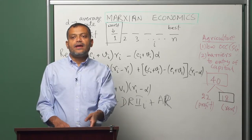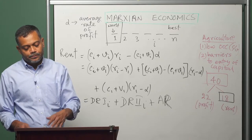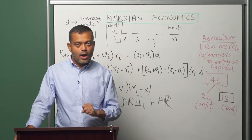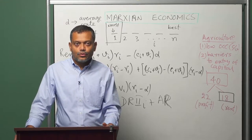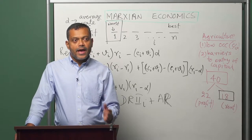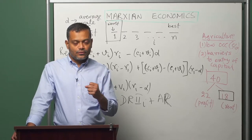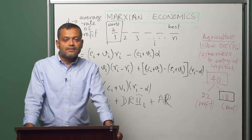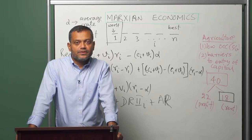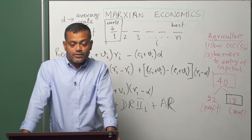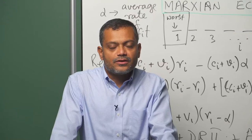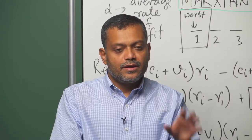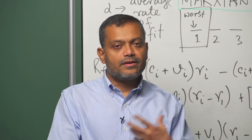With that, we come to the end of the argument developed by Marx in the three volumes of Capital. We have understood the processes related to the generation of surplus value — that was volume 1; processes relevant to the realization of surplus value — that was volume 2; and processes relevant to the distribution and redistribution of surplus value — that was volume 3. By the end of our analysis of the three volumes, we get a comprehensive picture of the structure and dynamics of capitalist economies.